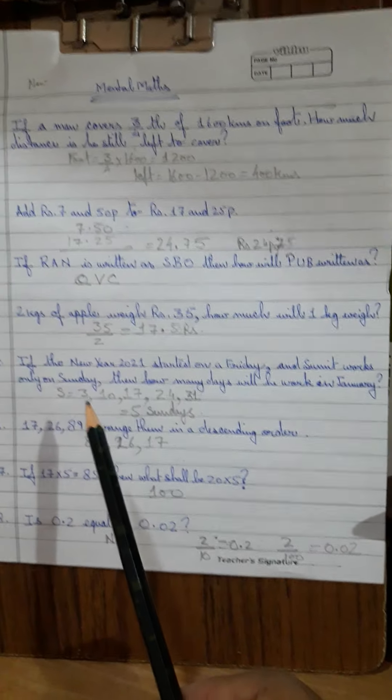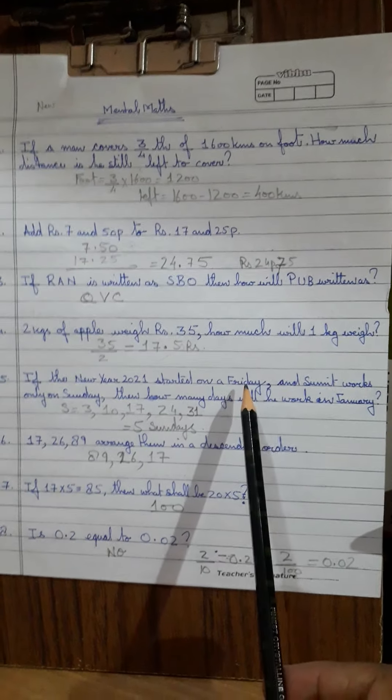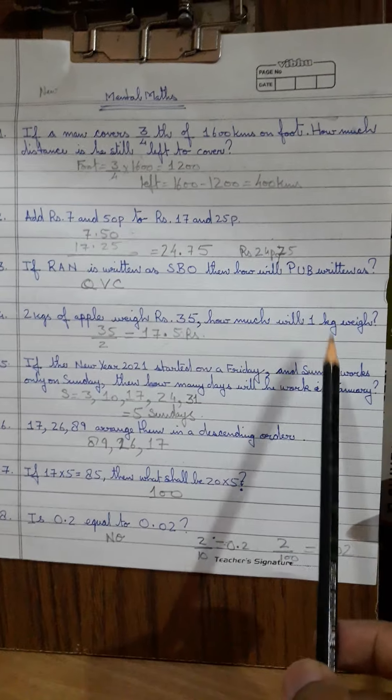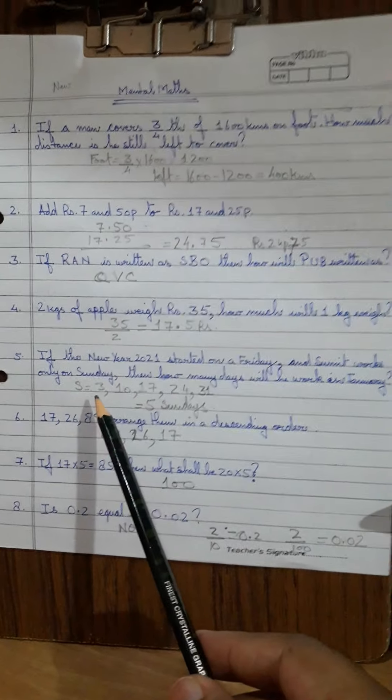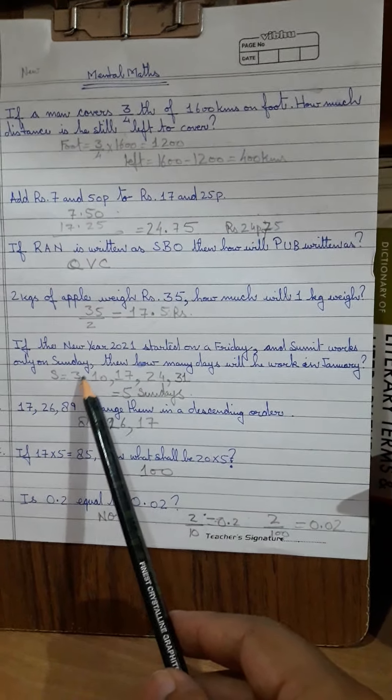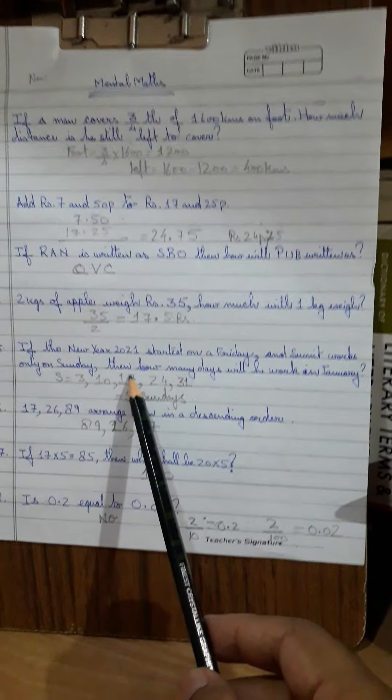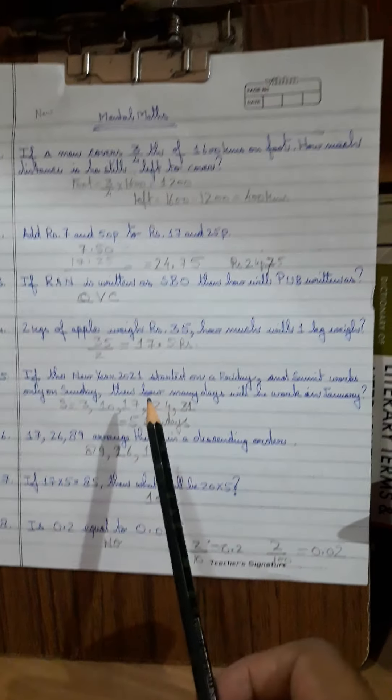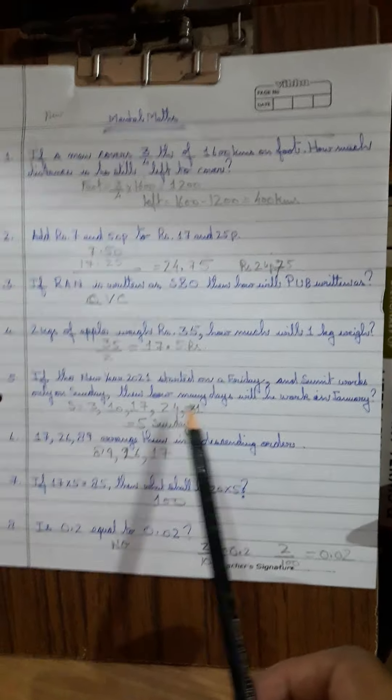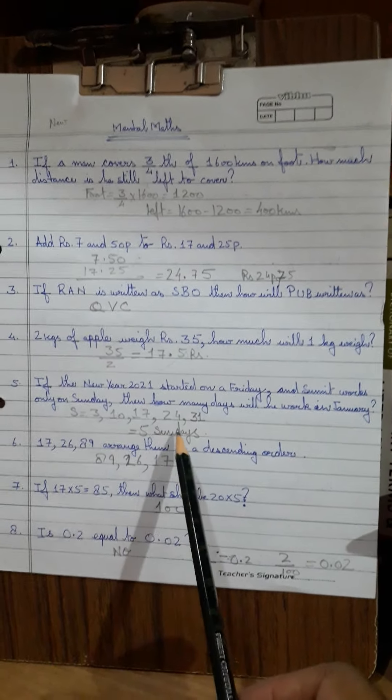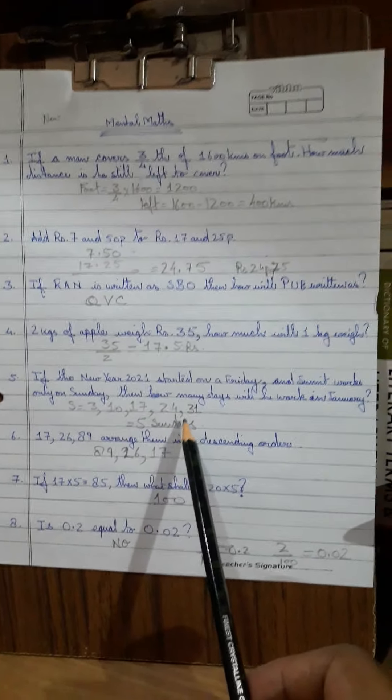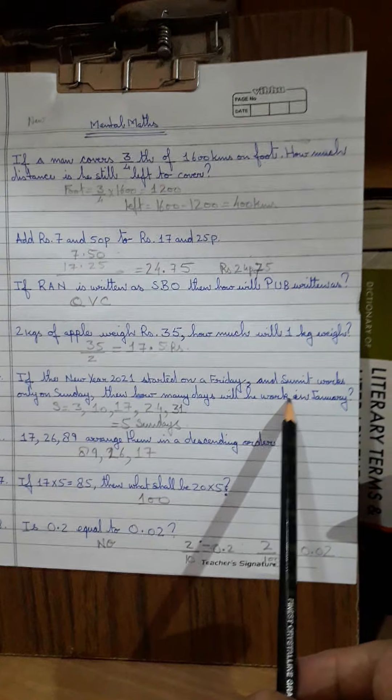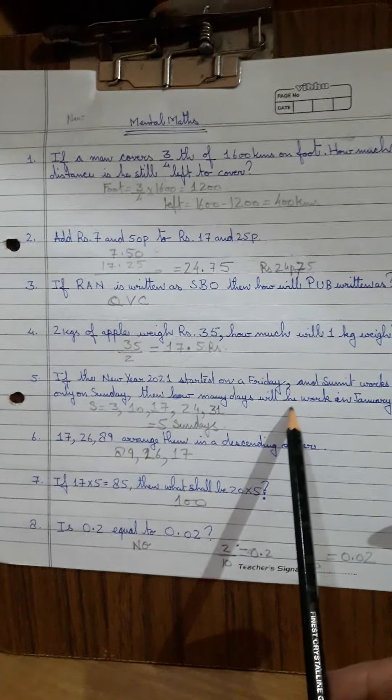Now this is an interesting one. Friday was first, second, third was a Sunday. So if first take out the number of Sundays, third is a Sunday, 7 plus 3 is 10, 10 plus 7 is 17, 24 and 31. So there are 31 days in January, so 5 Sundays he has worked. Just check out the number of Sundays. Alright.